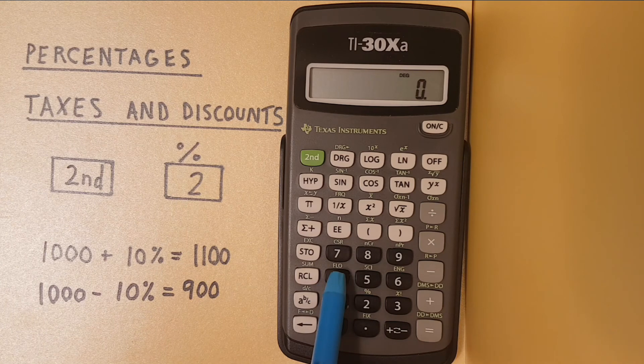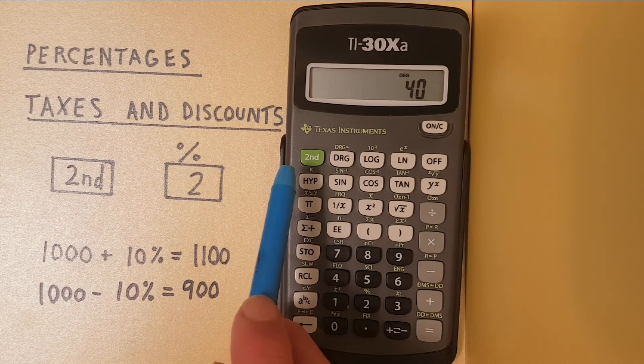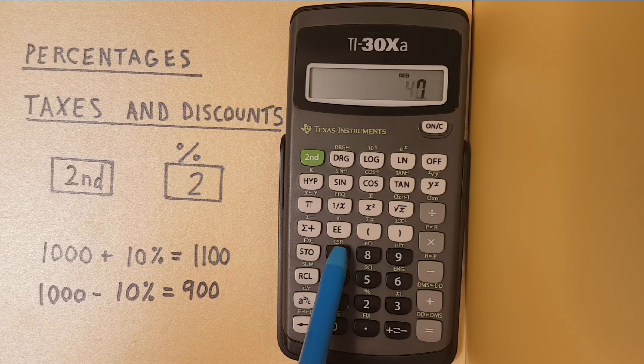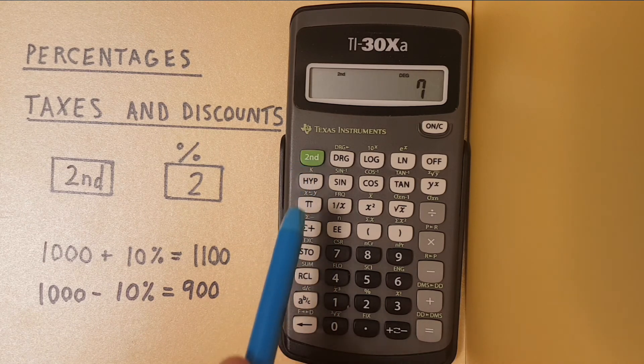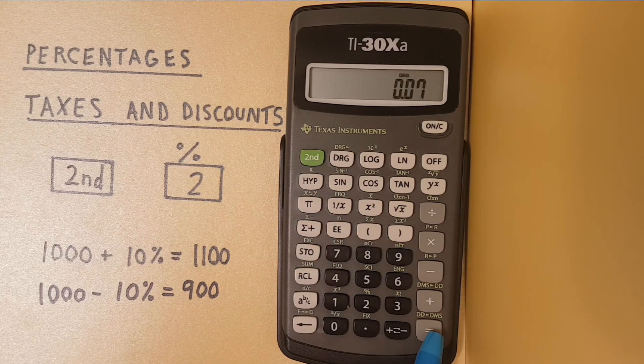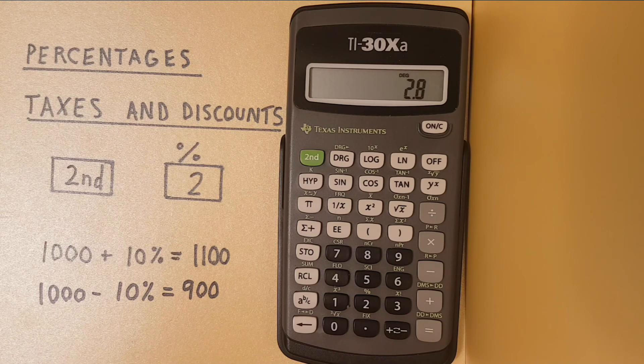How about 7% of 40? 40 times 7 second function percent equals and that gives us 2.8 which is 7%.